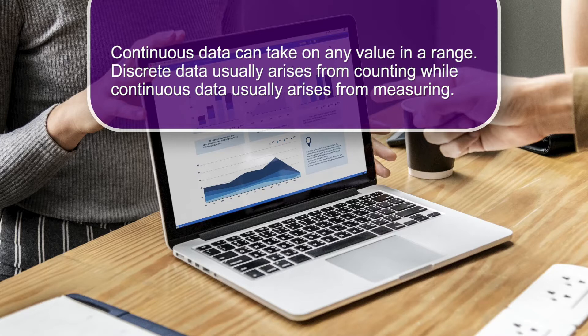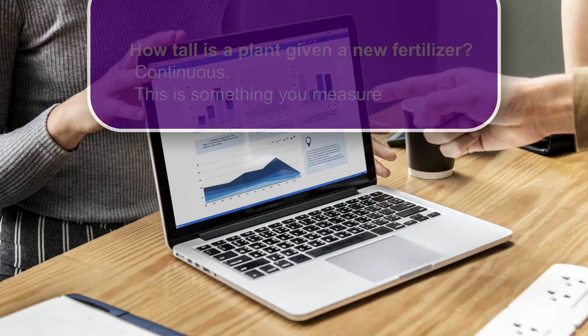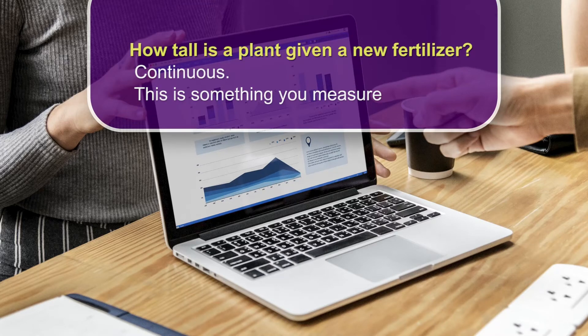This is a big difference between the two. For example, how tall is a plant given a new fertilizer — this is called continuous because it is something you are going to measure. Discrete data usually arise from counting while continuous data usually arise from measuring.